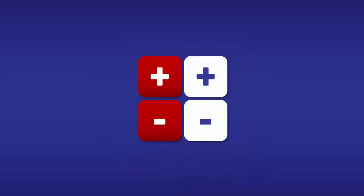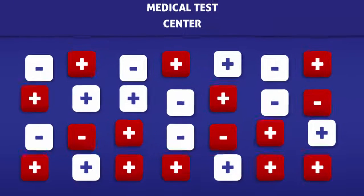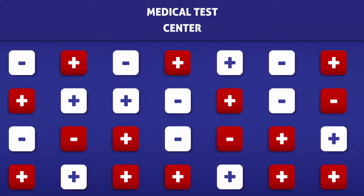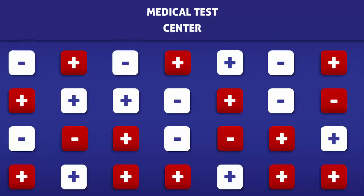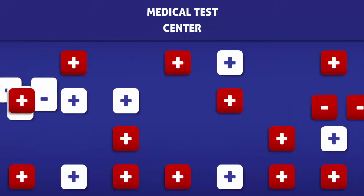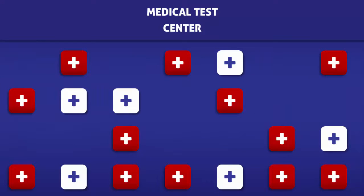In order to help us calculate the precision of a test, we are going to imagine that a group of people are being tested for a disease. The squares with a positive sign represent people who tested positive, and the squares with a negative sign represent people who tested negative. Since the negative tests are not needed to calculate the precision, for this lecture we are going to focus on the squares with a positive sign.